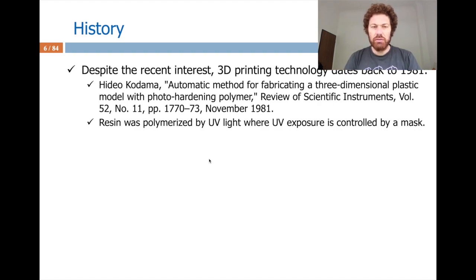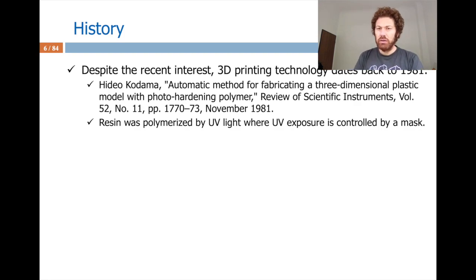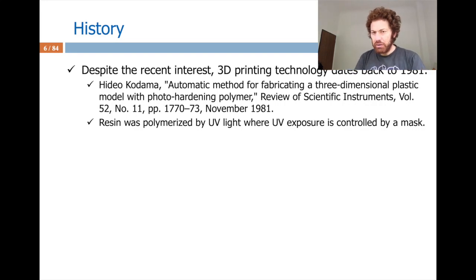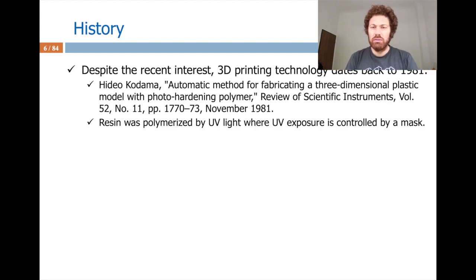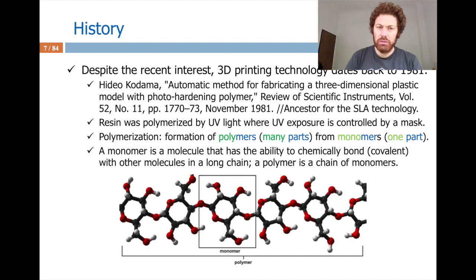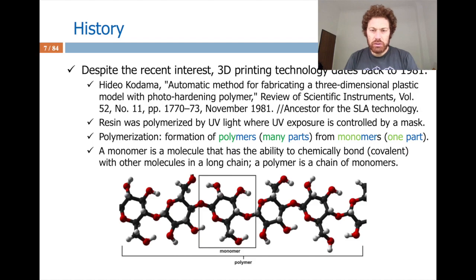Basically, we have a resin to which we expose UV light, controlled by a mask of that layer. The points where the UV light hits get frozen, giving you a 3D shape. Let's be more chemical for at least one slide — the resin is polymerized.